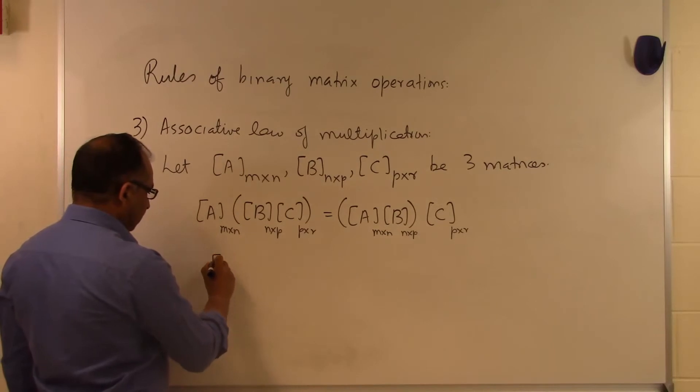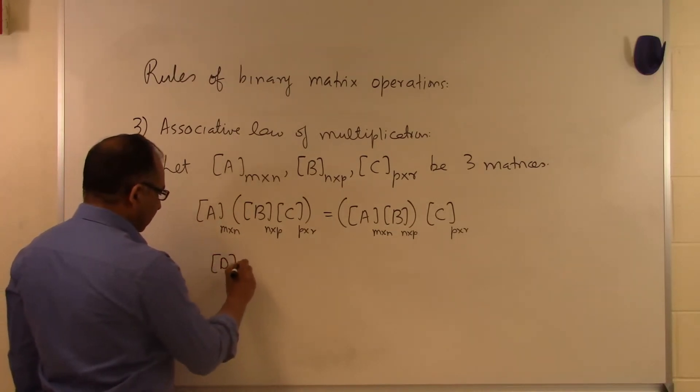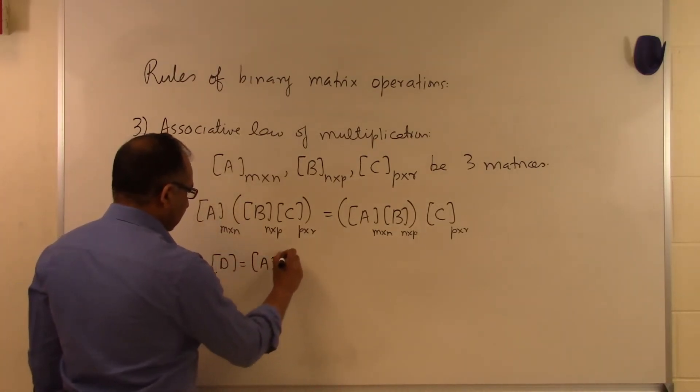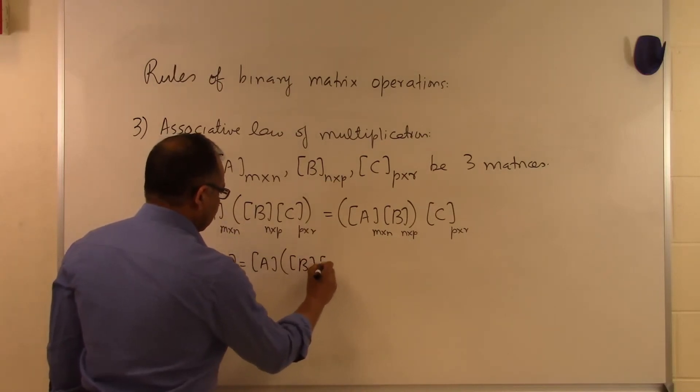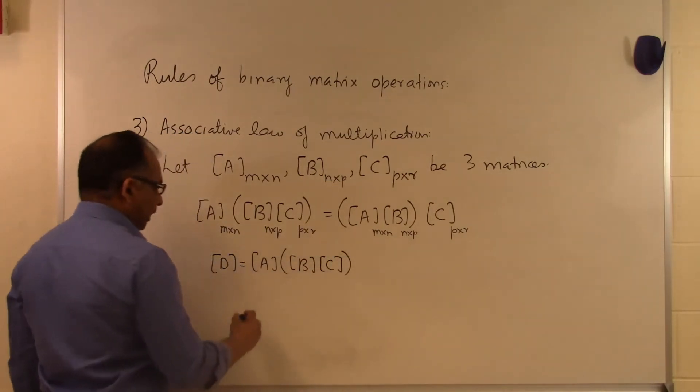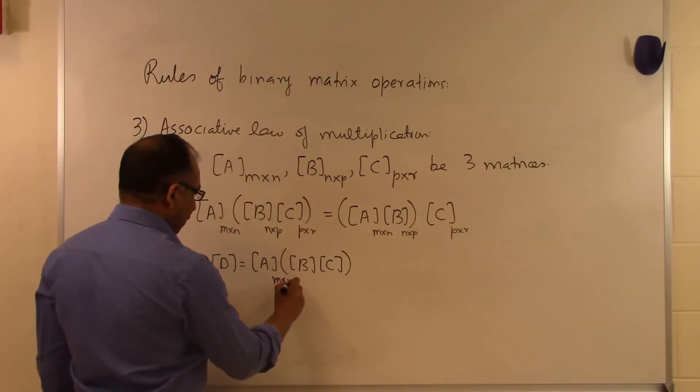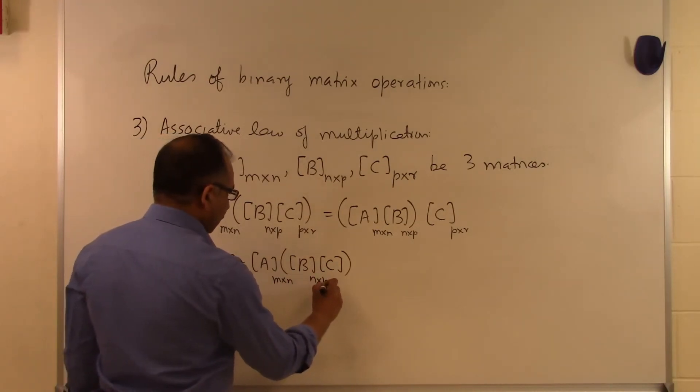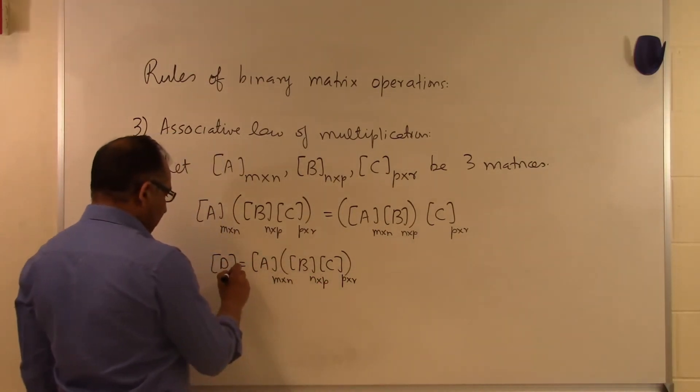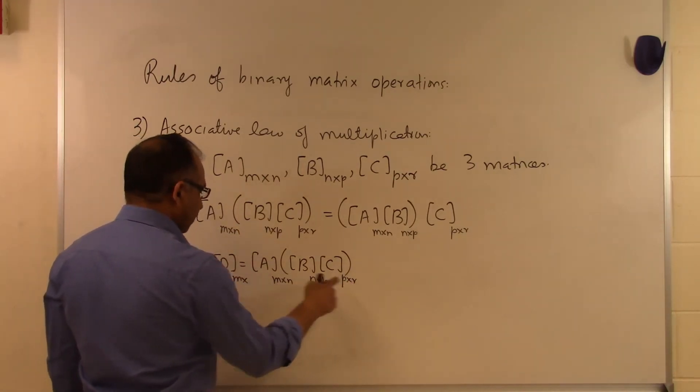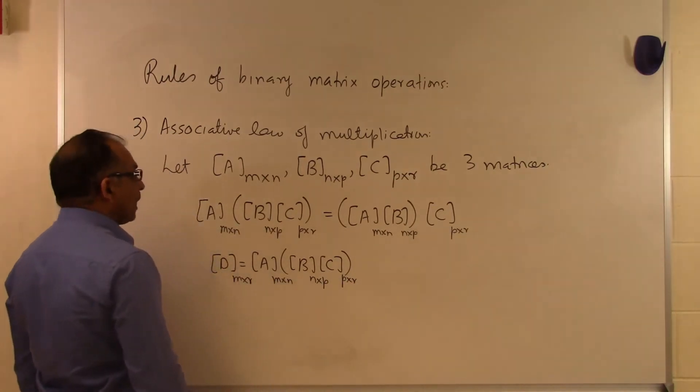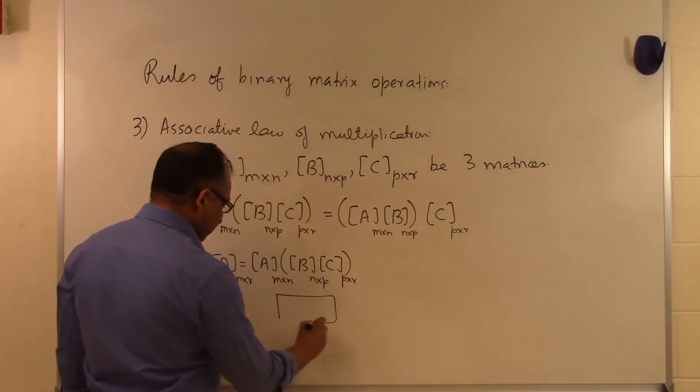So if we call this to be, let's suppose D to be A times B times C, then because this is M rows and N columns, this is N rows and P columns, and this is P rows and R columns, this resulting matrix D will have this many rows and this many columns. And that is the associative law of multiplication. And that is the end of this segment.